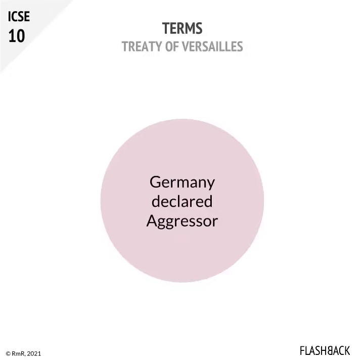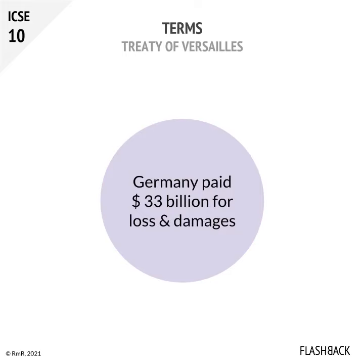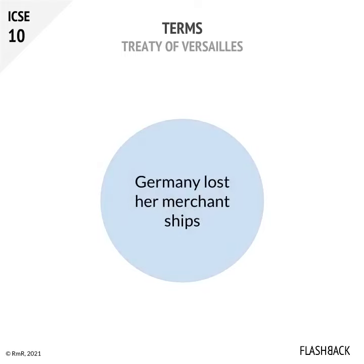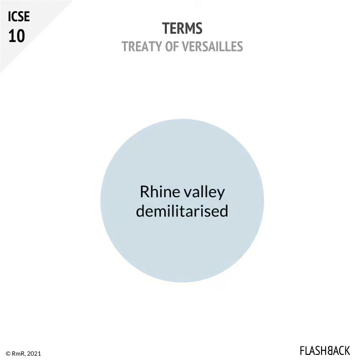The terms of the Treaty of Versailles signed between the Allies and Germany were: Germany was declared guilty of aggression. Germany was required to pay for the loss and the damages incurred by the Allies, which came to around $33 billion. Germany also lost her merchant ships. The Rhine Valley was decided to be demilitarized.